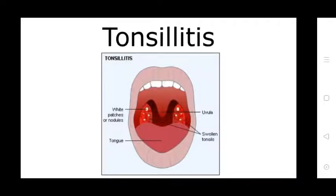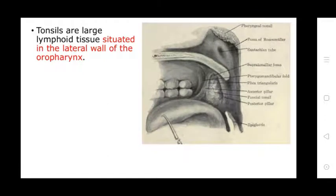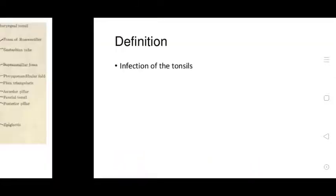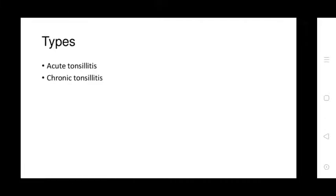Today's topic is tonsillitis. Tonsillitis is a disease diagnosed with wide patches of nodules on the uvula and swollen tonsils. Tonsils are large lymphoid tissue situated in the lateral wall of the oropharynx, as shown in this diagram. Definition: infection and inflammation of the tonsils. Types: acute tonsillitis and chronic tonsillitis.